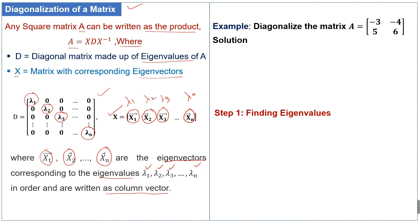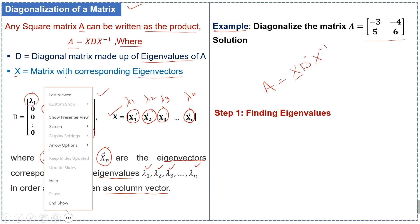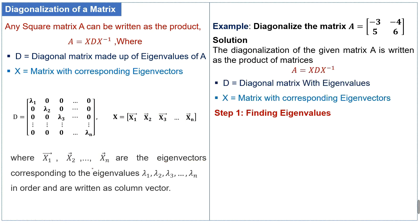Let's discuss an example related to diagonalization. We will diagonalize the given square matrix A. Diagonalizing means converting the matrix into the product of the eigenvector matrix, the diagonal matrix, and the inverse of the eigenvectors matrix. So A = X · D · X⁻¹, where D is the diagonal matrix with eigenvalues and X contains the corresponding eigenvectors. For diagonalization, first we find the eigenvalues.